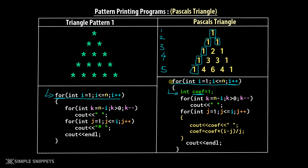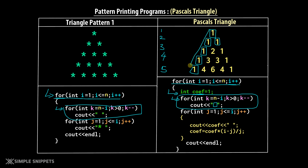Inside the outer loop, the first inner for loop is exactly the same as before — used to create extra blank spaces on the command prompt, producing the triangular spacing. The second inner for loop is where the difference lies: instead of printing a star, we print the coefficient and then use the formula: coefficient = coefficient * (i - j) / j, where i and j are the iterators. We'll understand this by dry running.